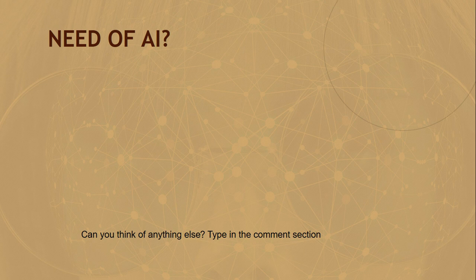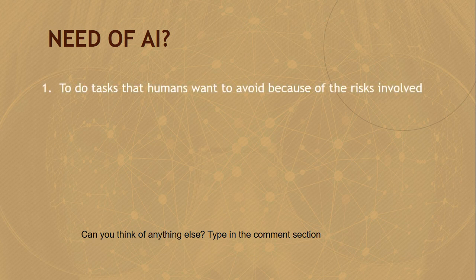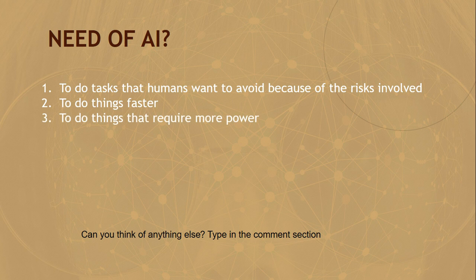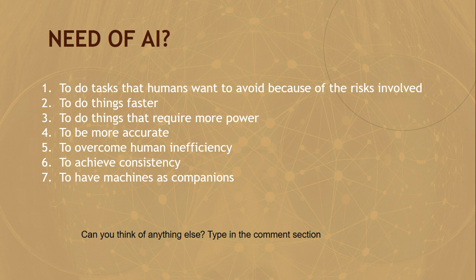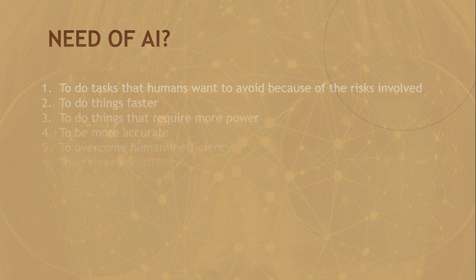What are the needs of AI? To do tasks that humans want to avoid because of the risks involved, to do things faster, to do things that require more power, to be more accurate, to overcome human inefficiency, to achieve consistency, to have machines as companions, and to understand how humans function and have evolved.